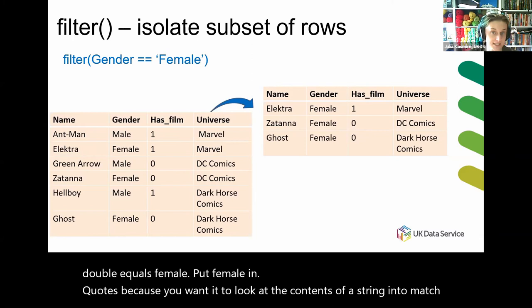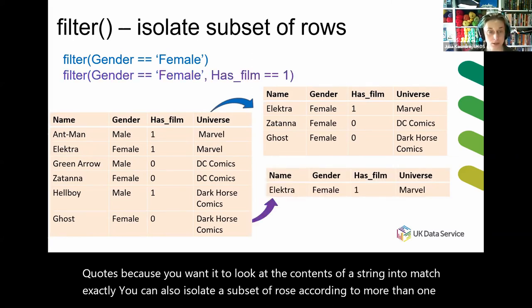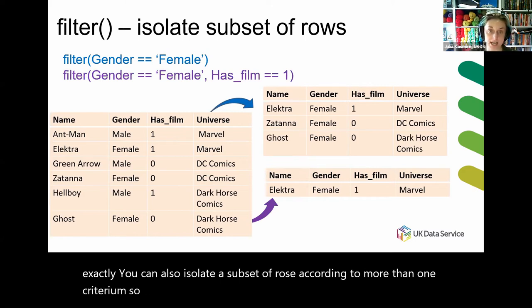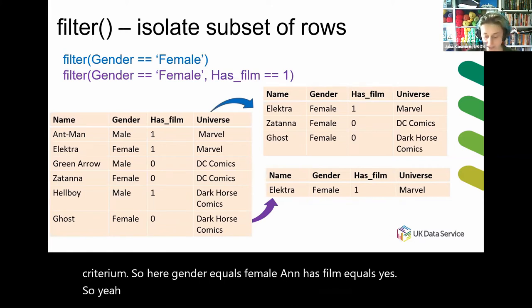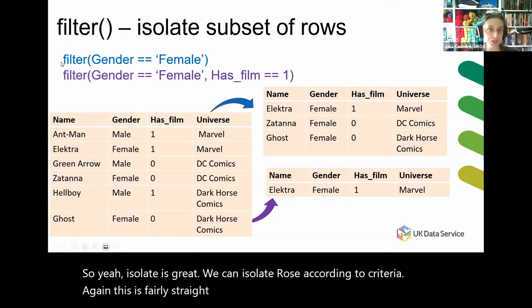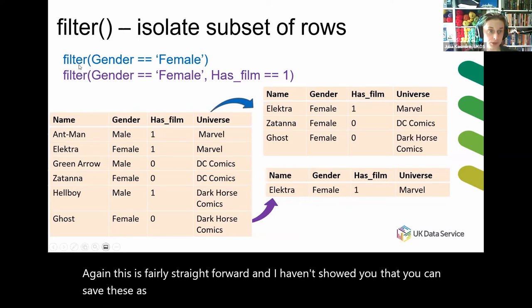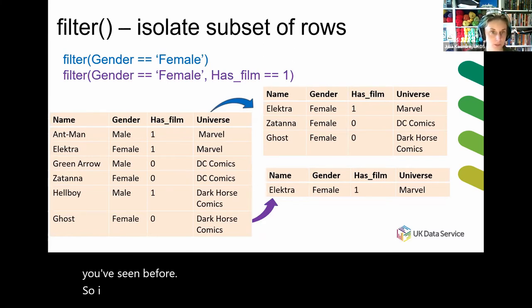You can also isolate a subset of rows according to more than one criterion. For example, gender equals female and has_film equals yes. So filter is great — we can isolate rows according to criteria. This is fairly straightforward, and you can save these results as a new variable or output, same as you've seen before.